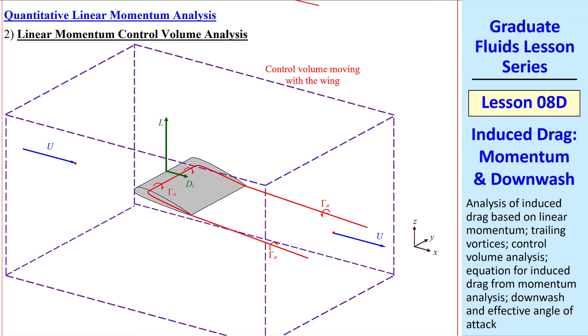Now let's do a quantitative analysis. As a quick review, in the previous lesson we used kinetic energy with a similar looking control volume. We got DI, the induced drag, is one half rho times integral over the area A, the area of this downstream face, of v squared plus w squared dA. Where we're talking about the yz plane, this face is perpendicular to x. In this lesson, we'll use linear momentum to try to come up with another equation for induced drag.